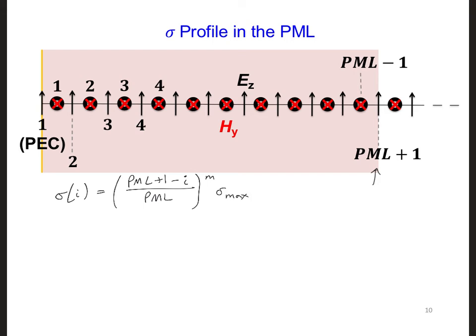Of course, the way I've written it here, we're actually going to get a conductivity of 0 at PML plus 1. A conductivity of 0 is not very useful since that's equivalent to air. Instead, if we change it so that a conductivity of 0 occurs a half of a cell to the right at the location of the HY component, then this ez component at PML plus 1 will be one half of a cell into the absorbing material.